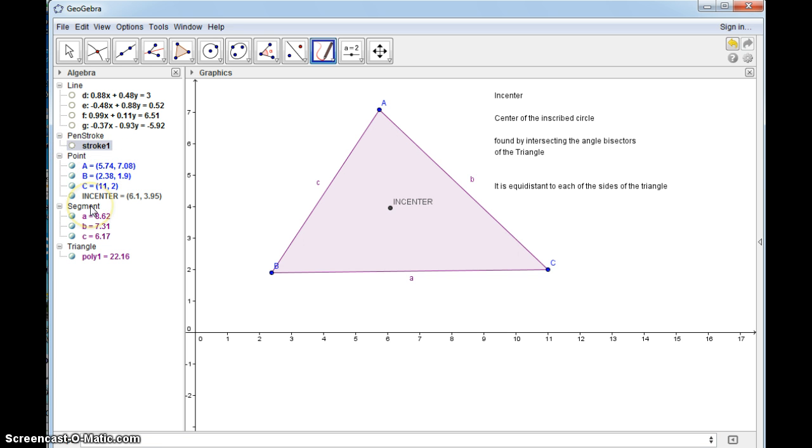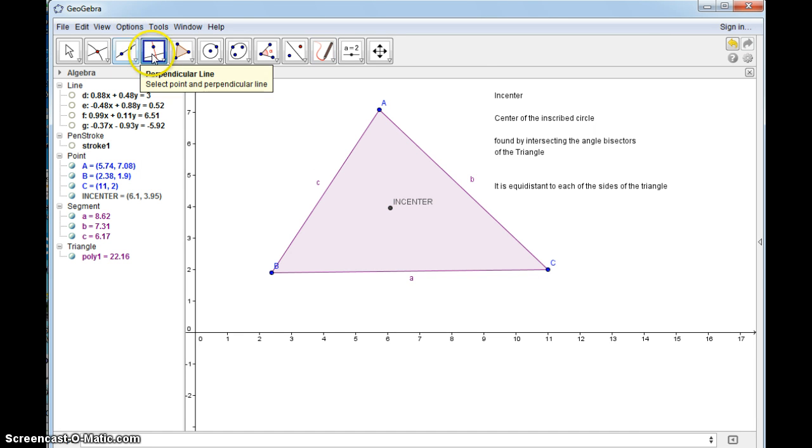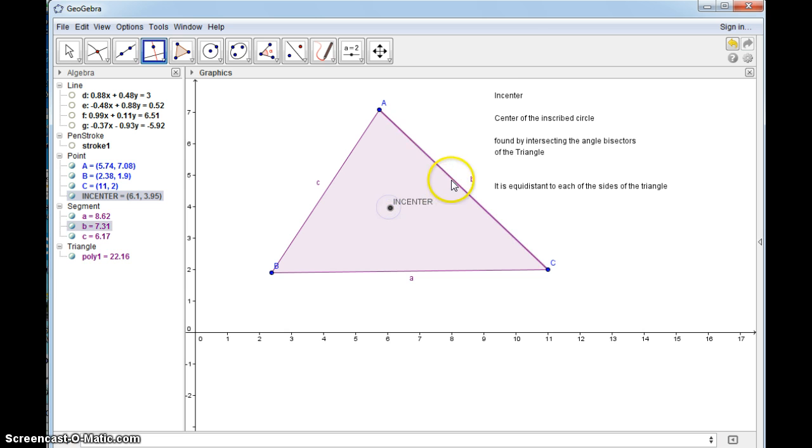So let me show you how to create the radius. Use a perpendicular line tool and you select the point and one of the sides. If it's equidistant to each of the sides of the triangle, I'm going to show you what that means. Intersect from here to here.